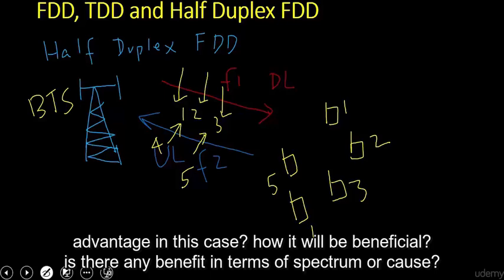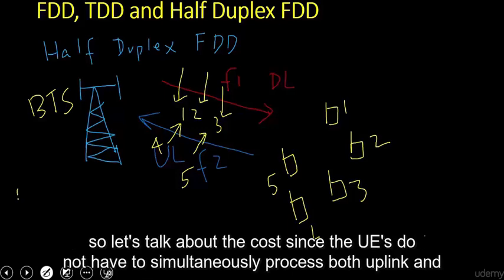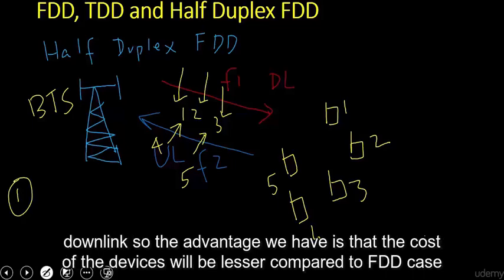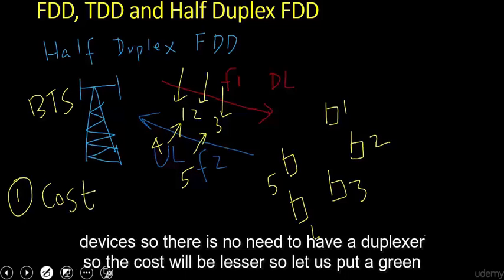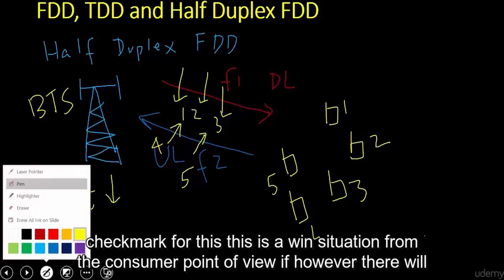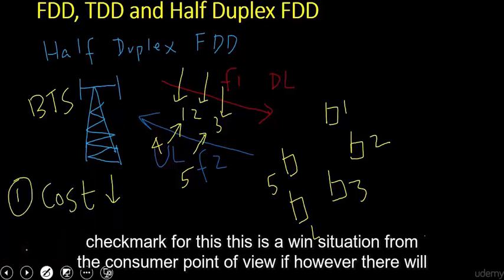Since UEs do not have to simultaneously process both uplink and downlink, the advantage is that the cost of devices will be less compared to FDD devices. There is no need to have a duplexer, so the cost will be lower — this is a win from the consumer's point of view.